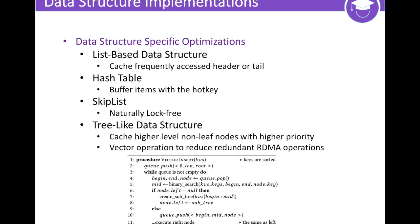The underlying APIs are general enough to implement various data structures. We also propose data structure-specific optimizations, with more details in our paper. For instance, in tree-like data structures, nodes in higher levels are more frequently accessed than lower-level nodes, so we choose to cache higher-level inner nodes with higher priority.